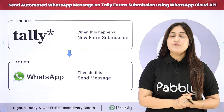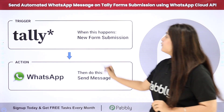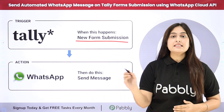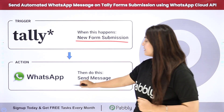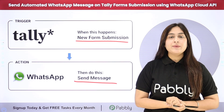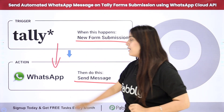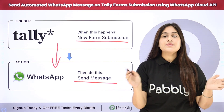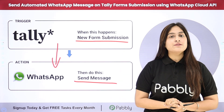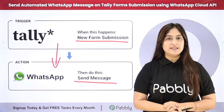I have created an inquiry form for my business using Teleforms, and here my objective is that whenever a new form submission is received, then automatically and instantly an automated WhatsApp message should be sent to my lead through WhatsApp Cloud API. To automate the entire process I need to connect my Teleforms with my WhatsApp Cloud API account using an automation software named Pably Connect.